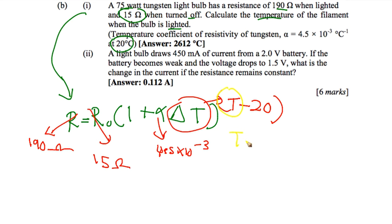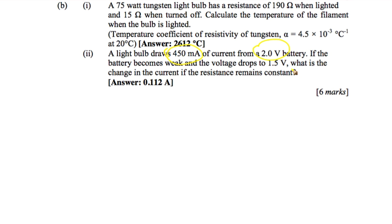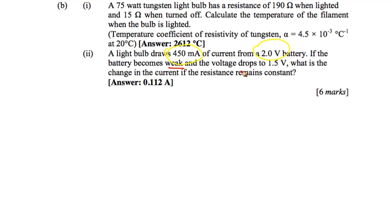Using the calculator, the temperature is 2612 degrees Celsius. Number two: the light bulb draws 450 milliamperes of current. The battery voltage is 2 volt, and if the battery becomes weak and the voltage drops to 1.5 volt, what is the change in current if the resistance remains constant?